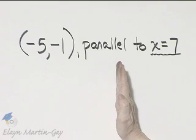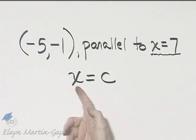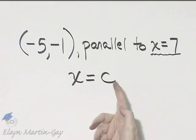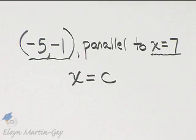Remember then, all vertical lines have this basic equation, x is equal to a constant. So which vertical line in particular will go through this point?